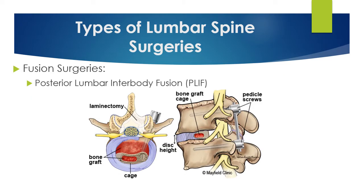Another kind of lumbar spine surgery is a fusion surgery, which means hardware will be inserted in your lumbar spine — including pedicle screws, rods, and a cage packed with bone graft — in order to achieve fusion of two vertebrae together.